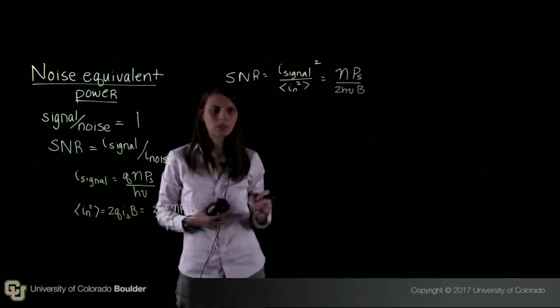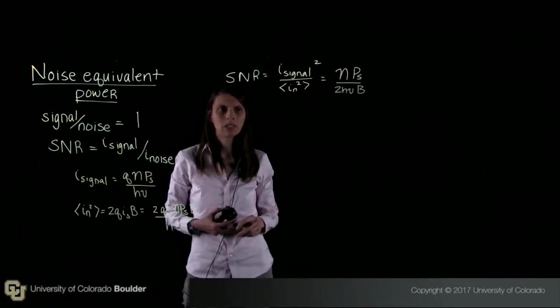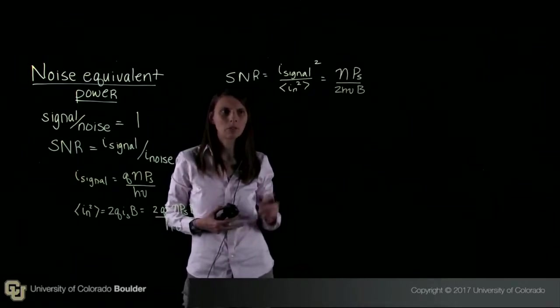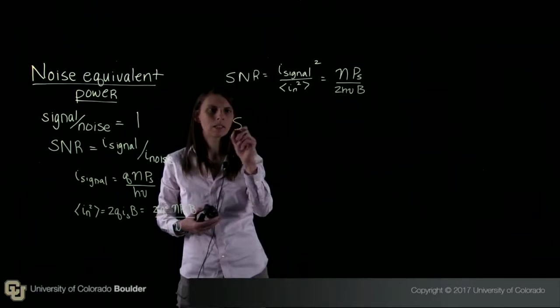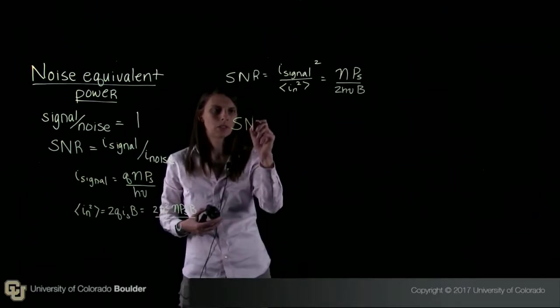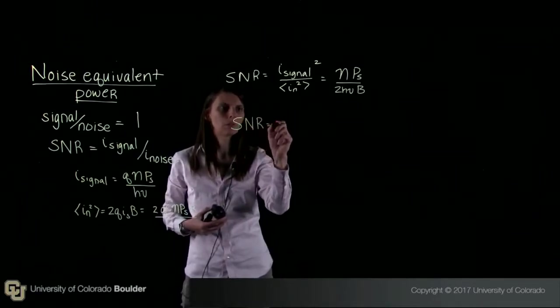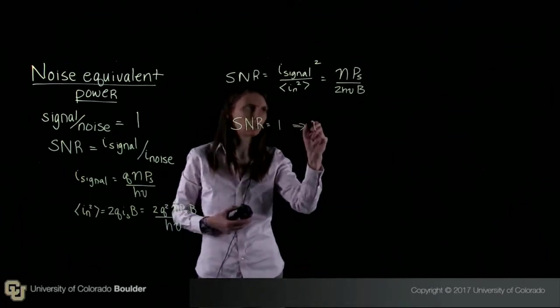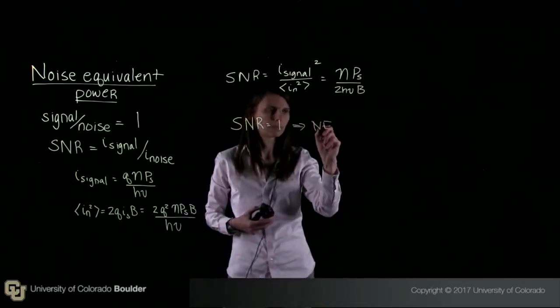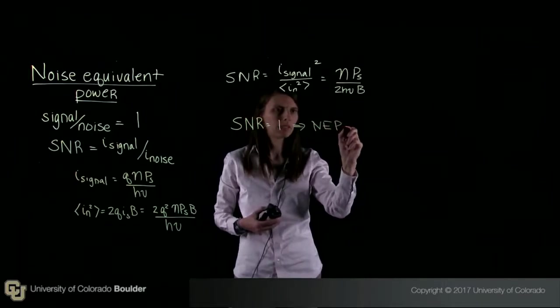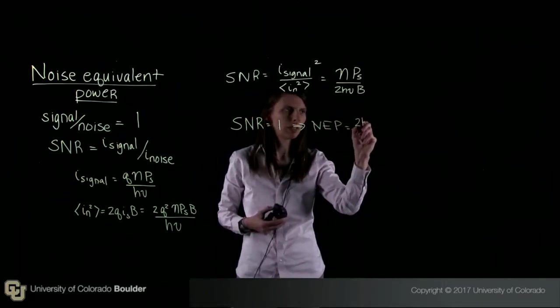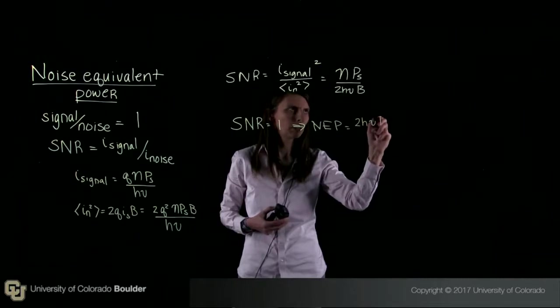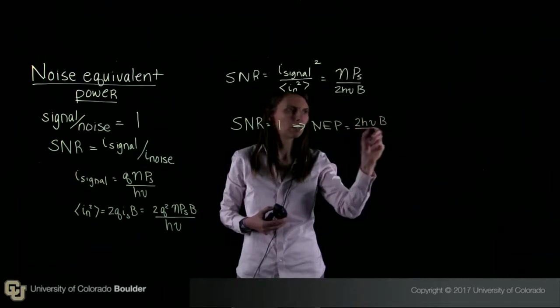So now we can look at the noise equivalent power. It's when the SNR equals 1. So if I set the SNR equal to 1, then what I find is that my noise equivalent power or NEP equals 2 H nu B over eta.